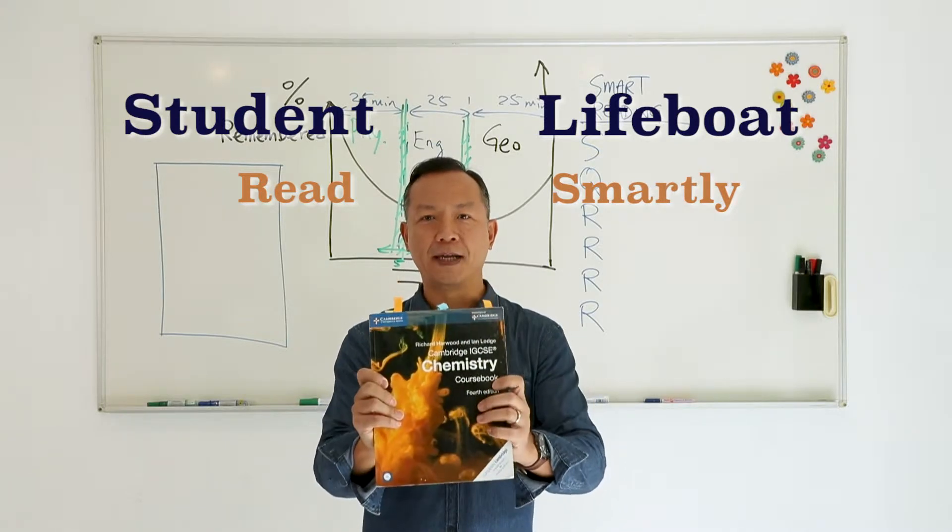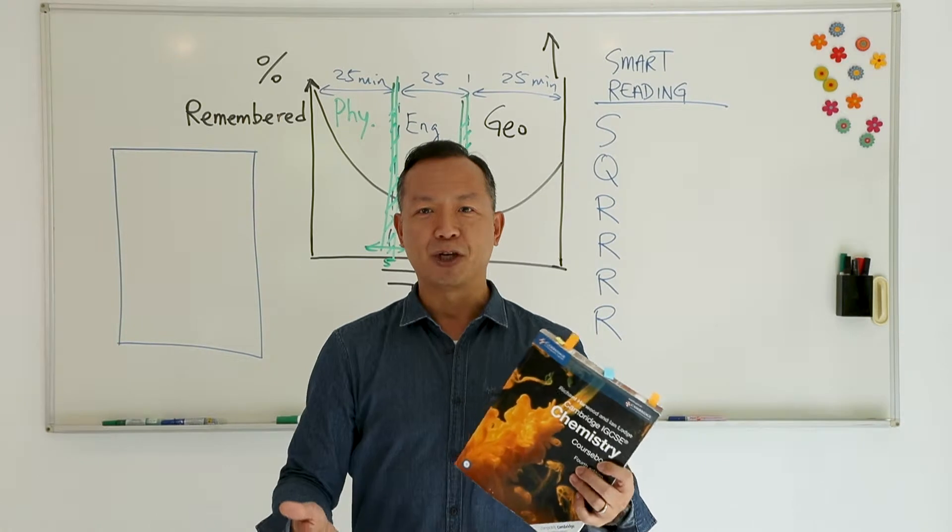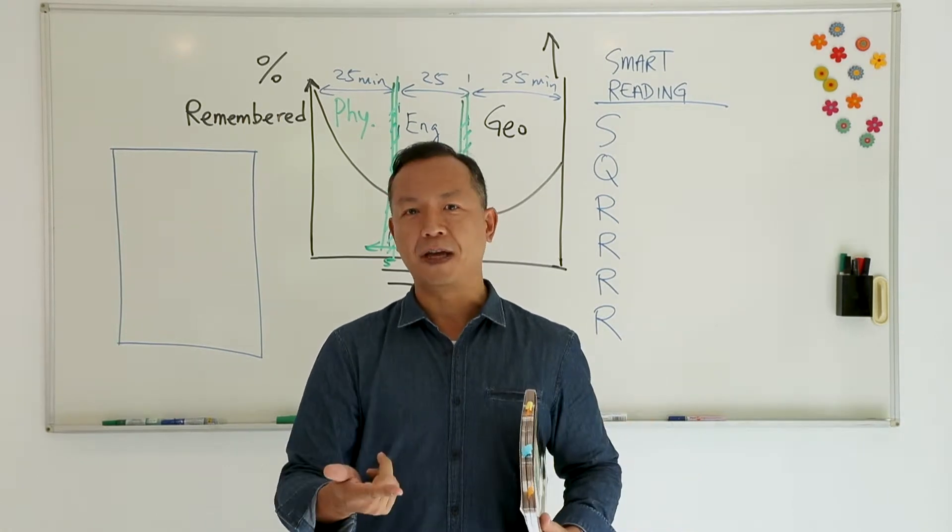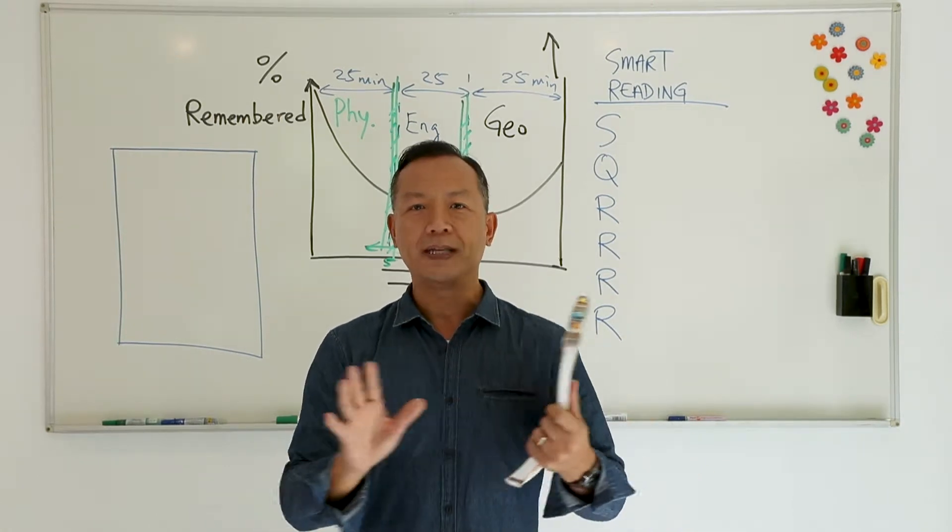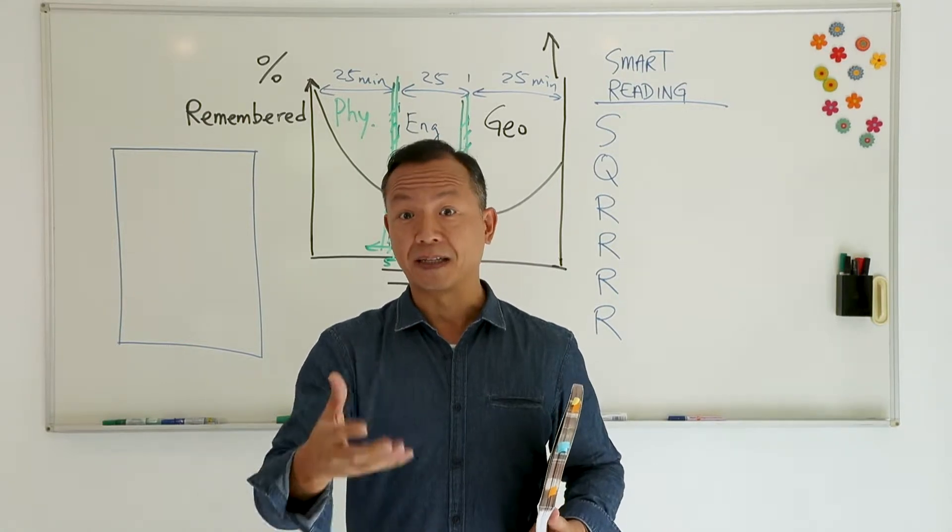First of all, I'm holding the IGCSE Chemistry textbook. Suppose you are about to study Chapter 5. This applies to other subjects as well - History, Geography, Biology, and all these subjects. How do you actually read in a smarter way?